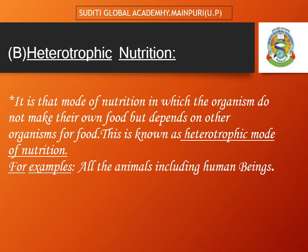Next is heterotrophic nutrition. It is that mode of nutrition in which living organisms do not make their own food but depend on other organisms for their food. This is known as heterotrophic mode of nutrition. Simply, hetero means depends. These living organisms depend on other organisms for their food. For example, all the animals including human beings.